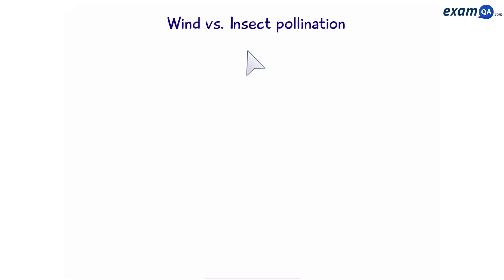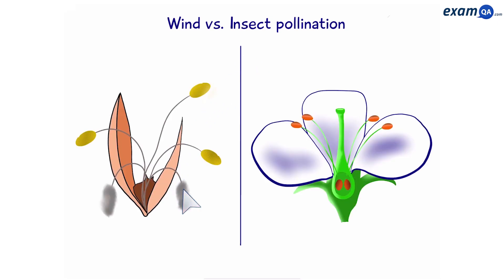Wind versus insect pollination. Here we have two different flowers. The flower on the left relies on wind to pollinate itself. The flower on the right relies on insects. So let's see the differences between these two flowers.